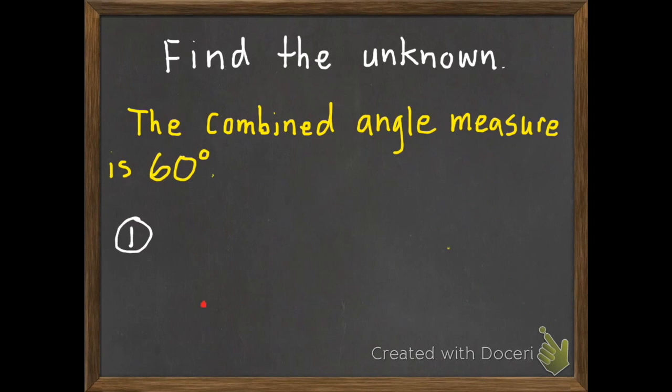So problem number one. The combined angle measure is 60 degrees. One of the two is 45 degrees. What does x equal?